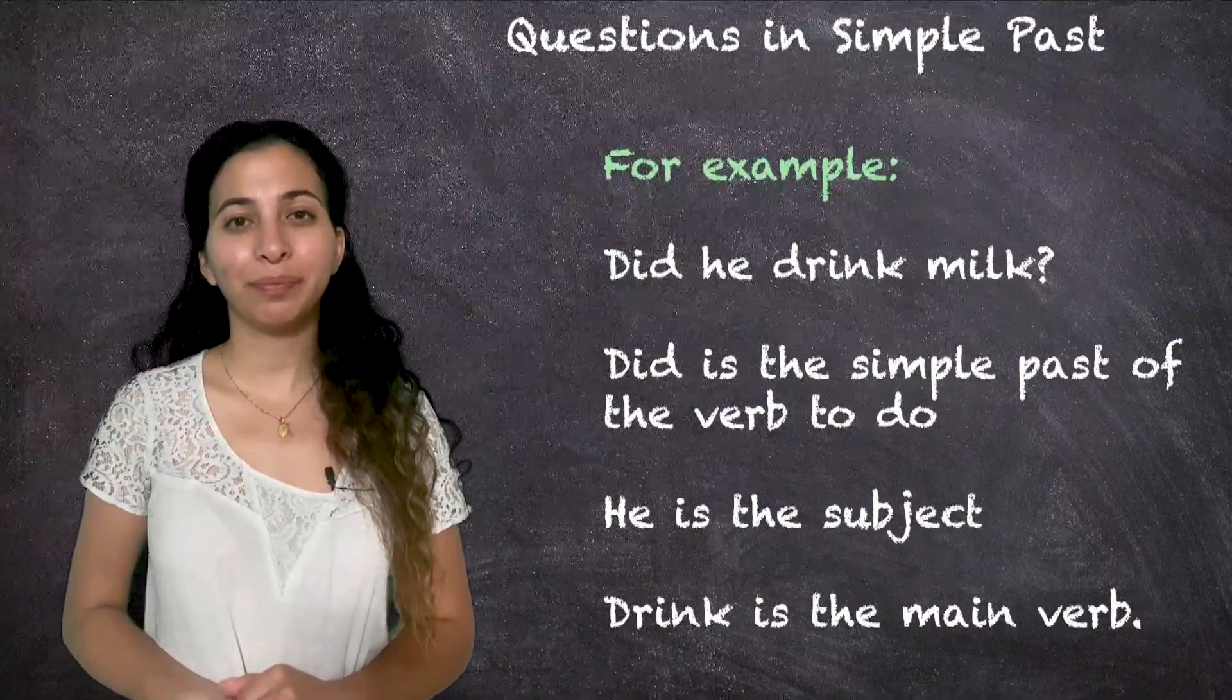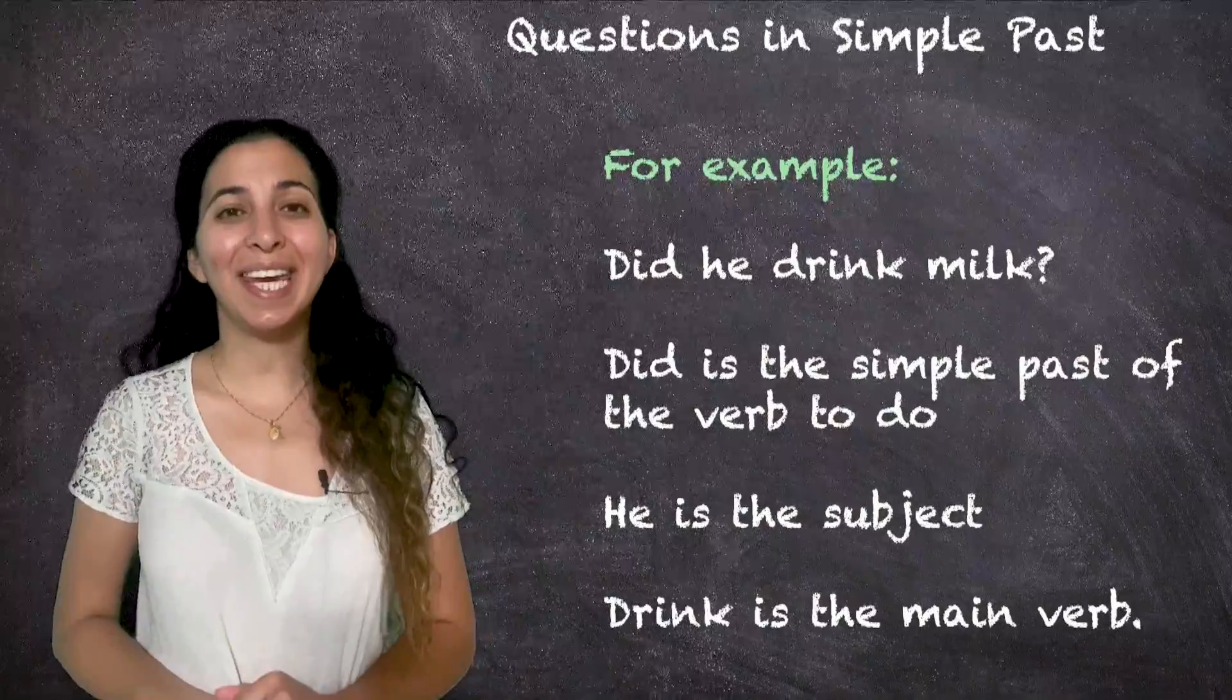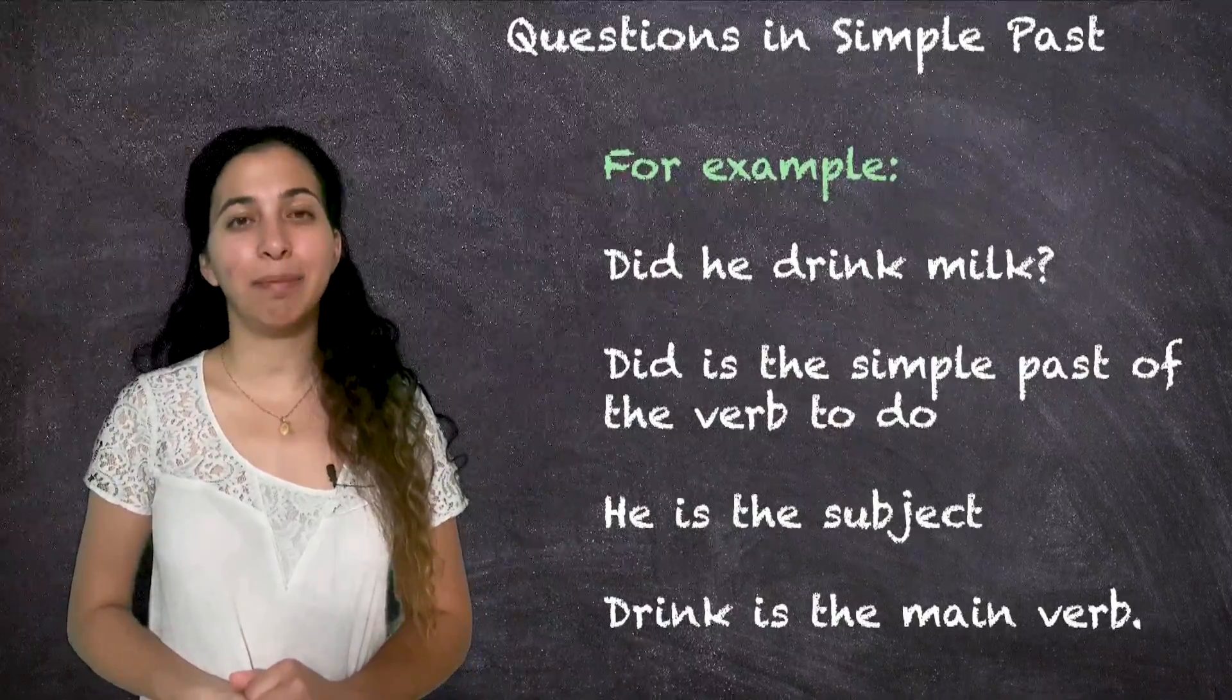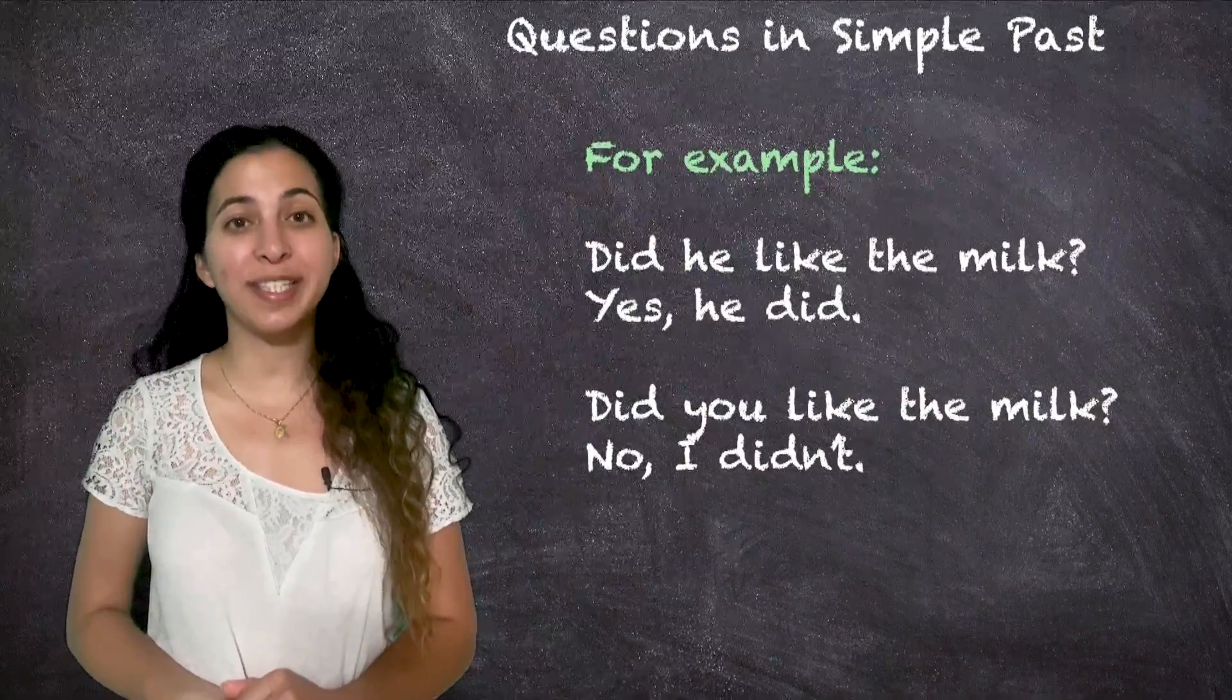Did he drink milk? Did is the simple past of the verb to do. He is the subject and drink is the main verb. The answer to this form of questions is yes or no.